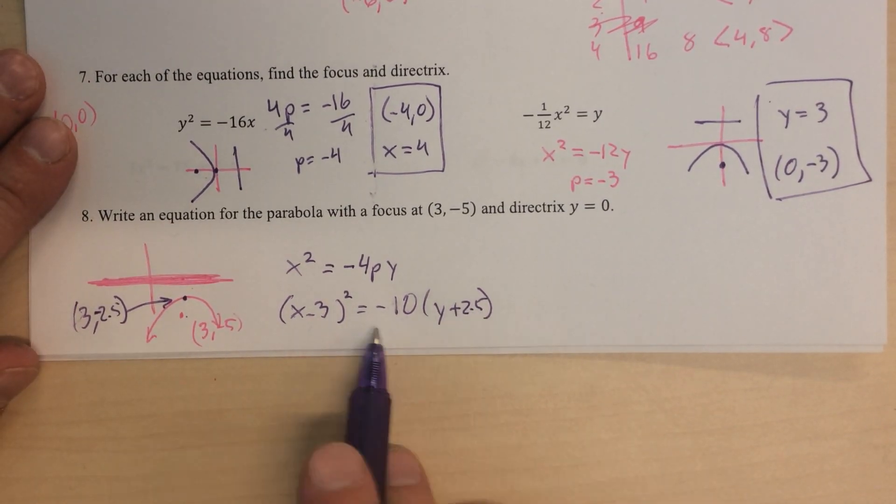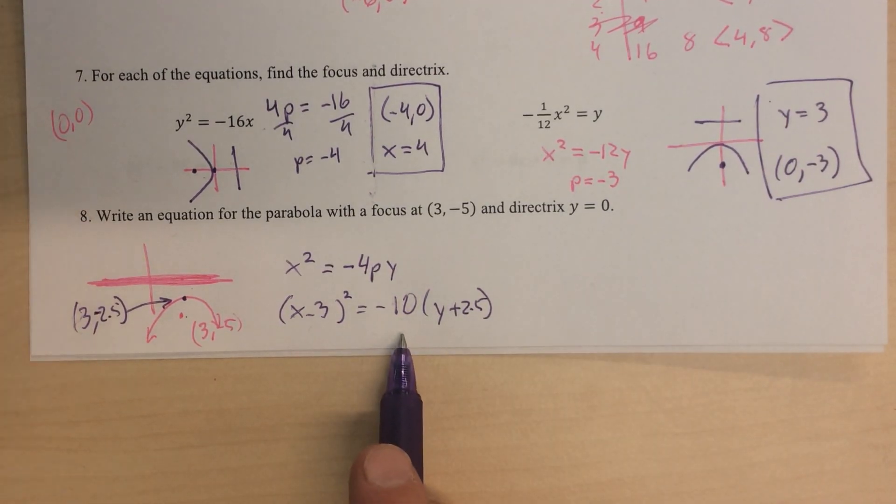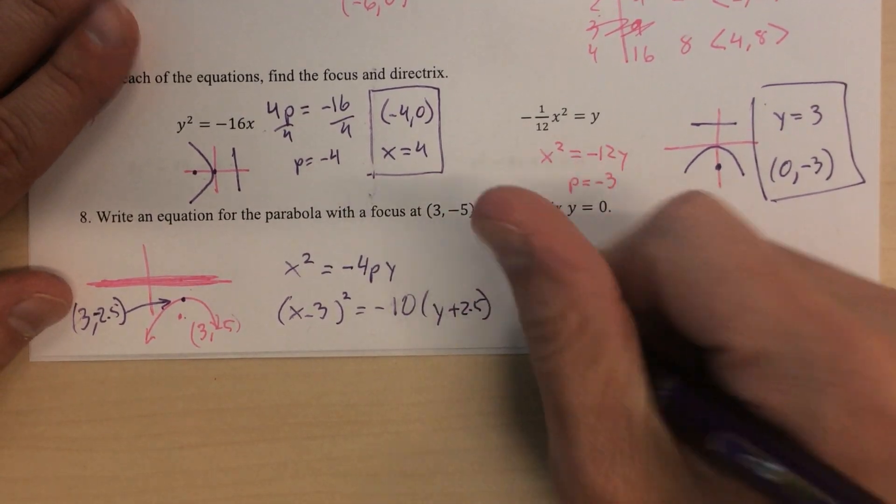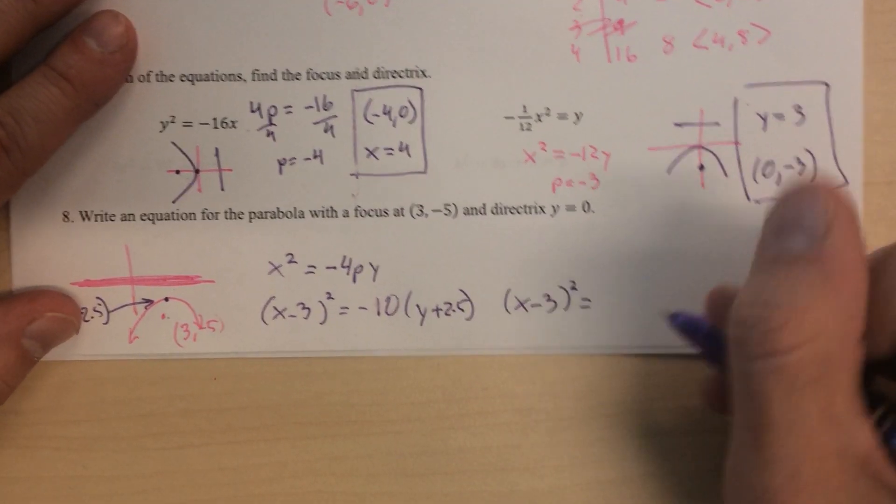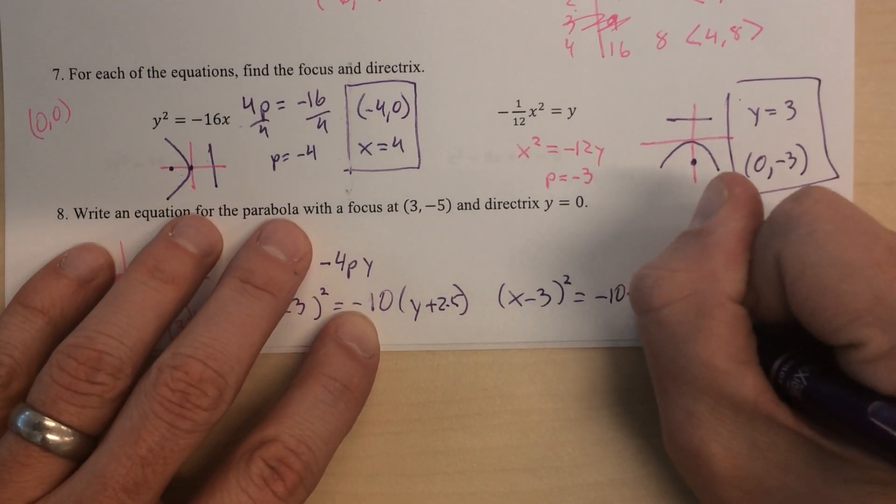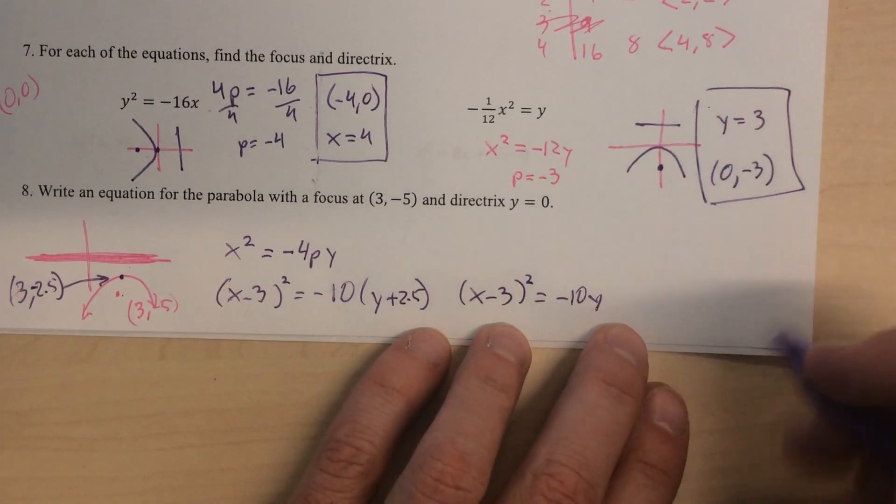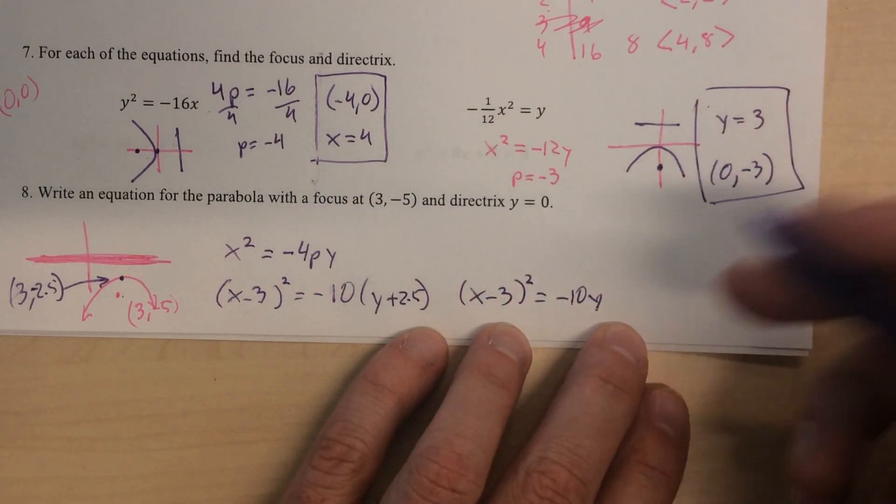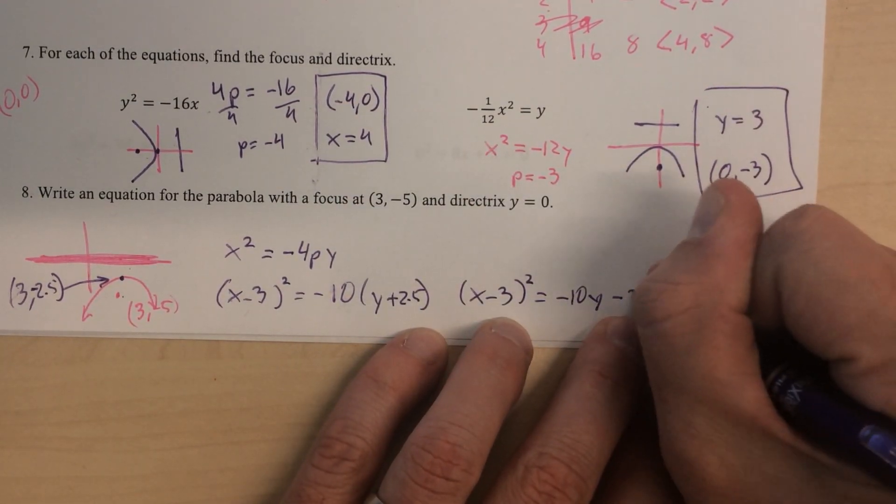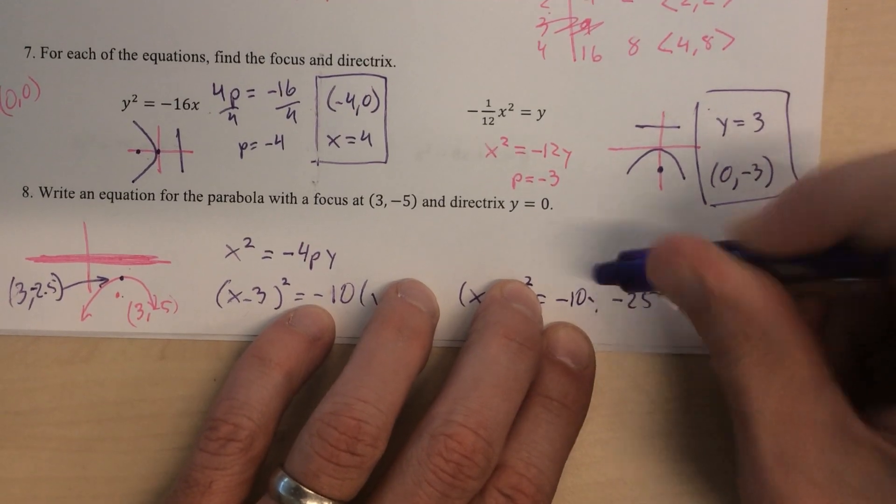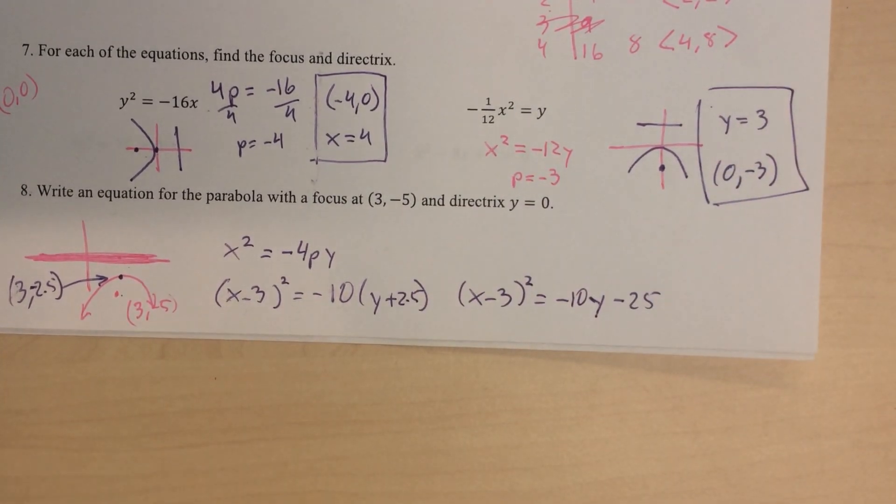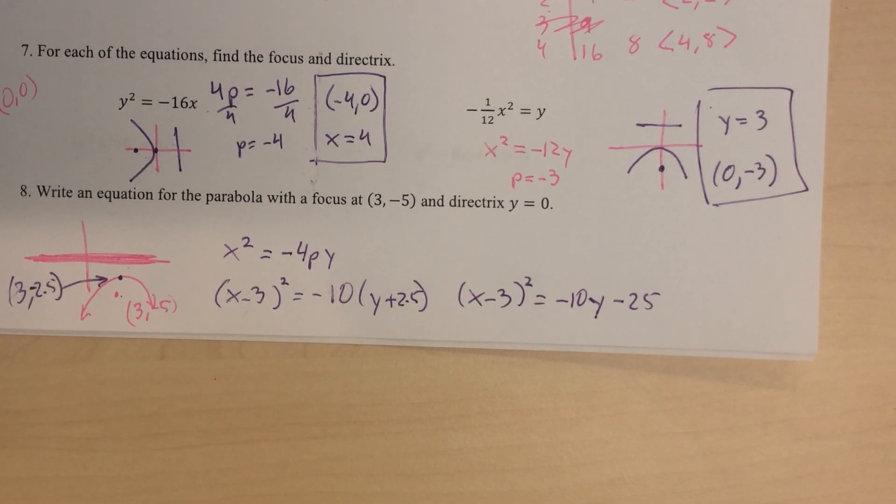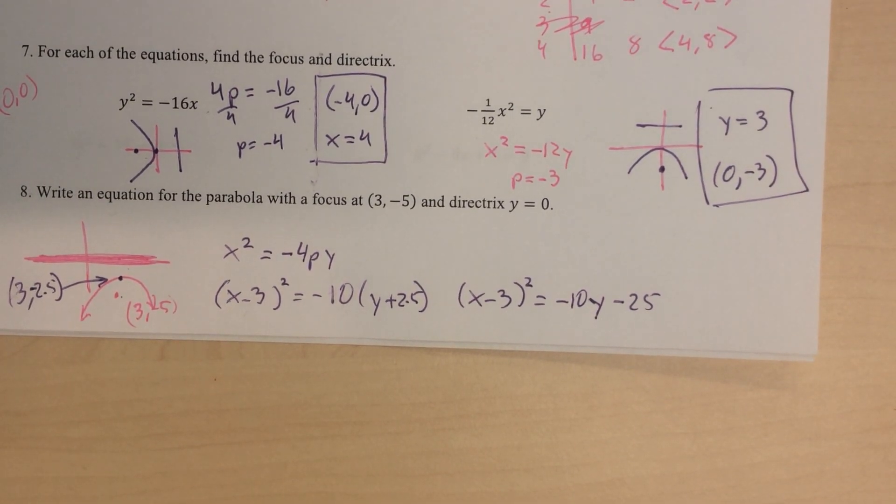Sometimes that gets distributed in. If it does, it's not a big deal. But you could just leave it like this. This is all perfectly fine. The alternative looks like this though. You'd have the x minus 3 squared. You distribute the negative 10 in. So you get negative 10y. When it distributes to the 2.5, you're going to get a negative 25. So not much difference. I really wouldn't worry about doing that unless like you're instructed to. All right. That is it.